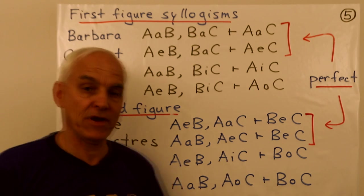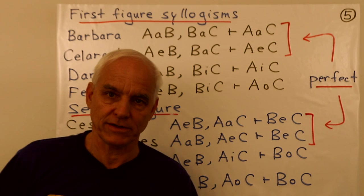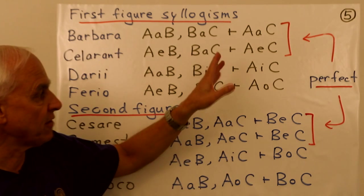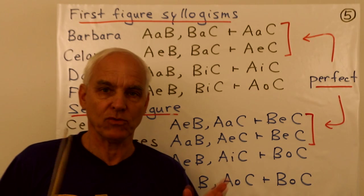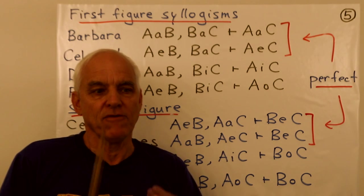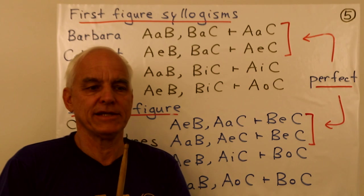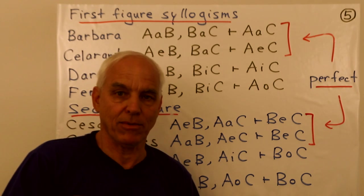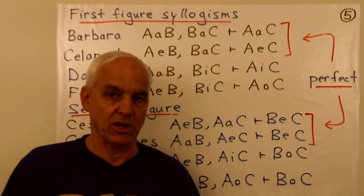And it turns out that in the third figure ones, there are none that are perfect. So in Aristotle's list, there are really only these four perfect ones that involve only these logical forms that are directly translatable to classical propositional logic.